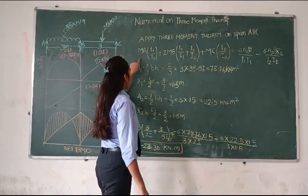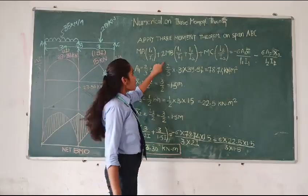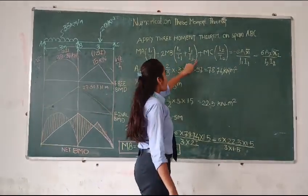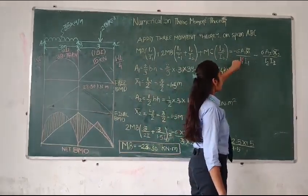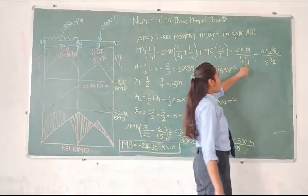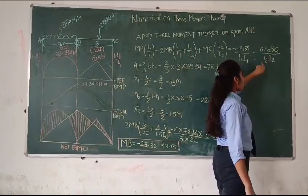After calculating 3 moment diagram of span ABC, the formula of 3 moment theorem is MA into L1 plus 2MB into L1 by I1 plus L2 by I2 plus MC into L2 by I2 equals minus 6A1 into X1 bar divided by L1 into I1 minus 6A2 into X2 bar divided by L2 into I2.